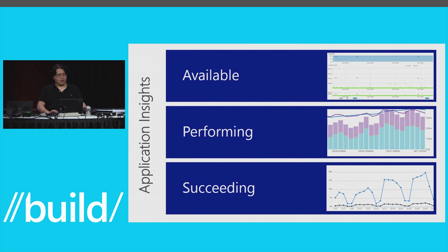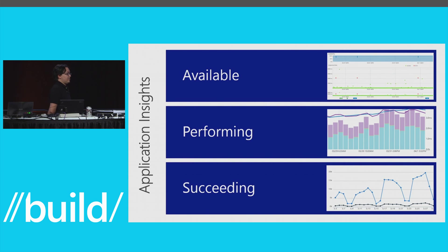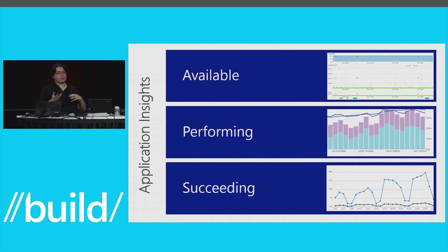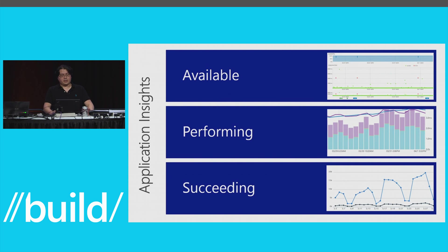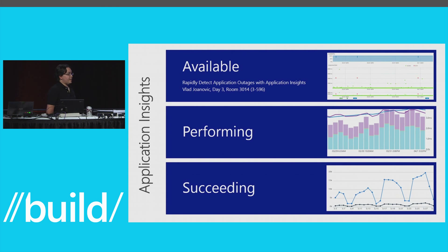For availability, the simplest option is to create ping tests — you give us an endpoint or set of endpoints, and we ping it from our points of presence around the world to make sure it's responding quickly. You can also exercise key transactions by authoring a web test and uploading it to our cloud platform. There's a deeper talk on availability testing with App Insights that Vlad will be doing on day three of the conference.